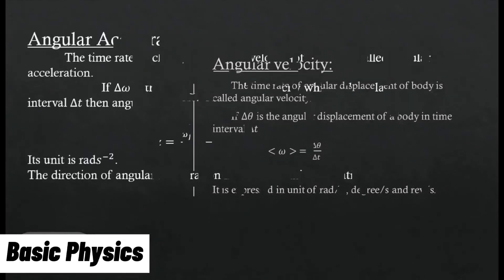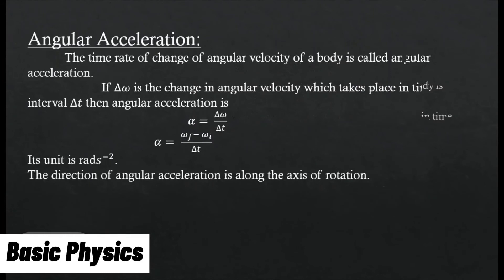Angular acceleration: The time rate of change of angular velocity of body is called angular acceleration. If Δω is the change in angular velocity which takes place in time interval Δt, then angular acceleration is α = Δω/Δt. Its unit is radian per second squared. The direction of angular acceleration is along the axis of rotation.